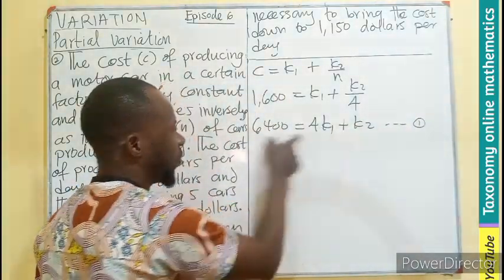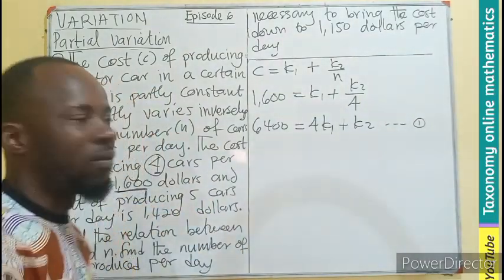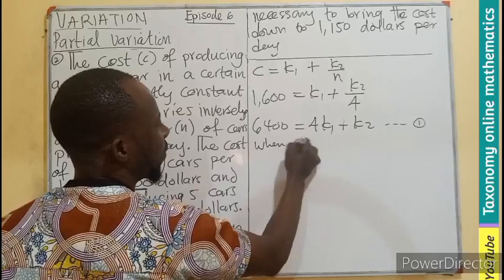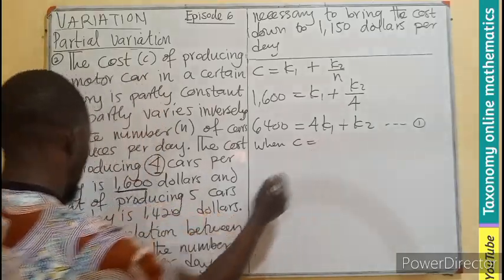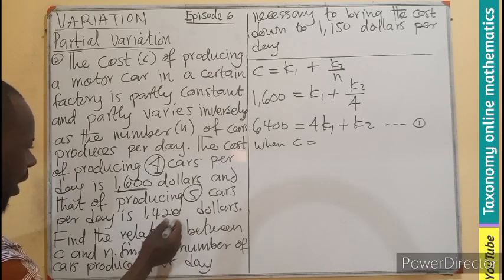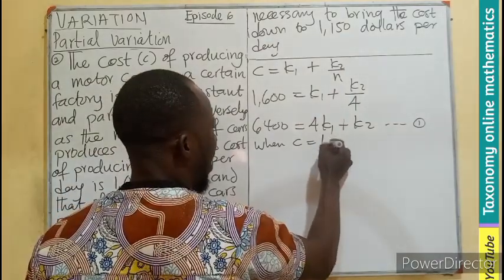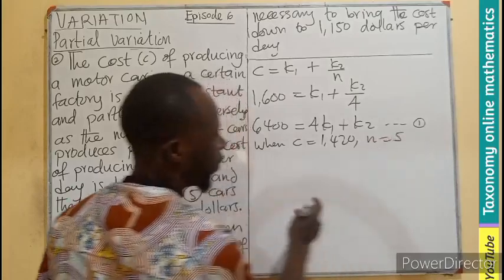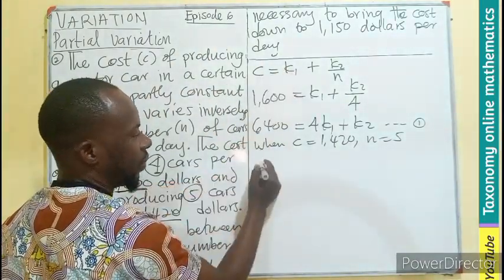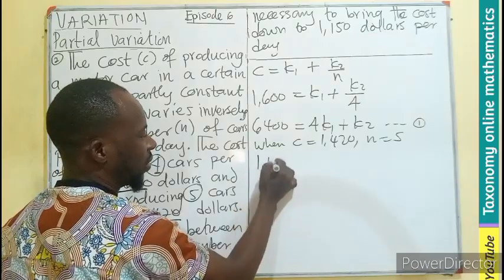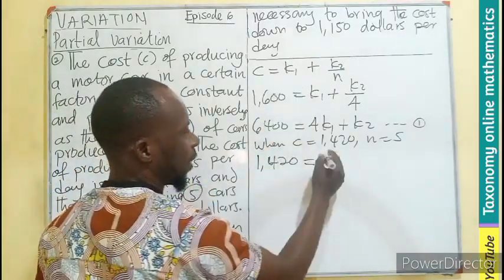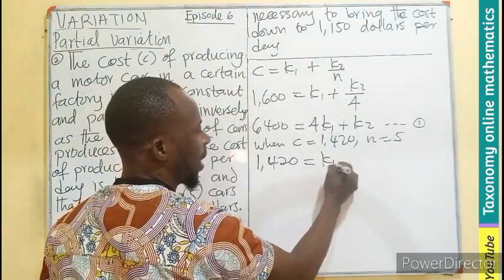We can decide to bring this one first before the 6,400, no problem. And also, when we have C equals to 1,420, your N will be 5. So let's do the substitution into the first relation. C is 1,420, K1 is also going to be there.